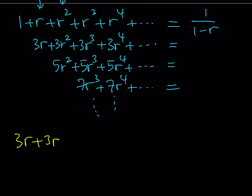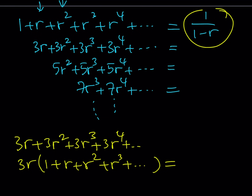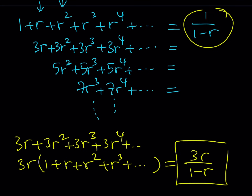Let me work them out so we can put it all together. Let's start with the second series. If you look at it carefully you'll notice I can pull out a 3r, and the rest is just 1 plus r plus r squared plus r cubed and so on. Since I already know this sum inside the parentheses equals 1 over 1 minus r, I can plug it in and get 3r over 1 minus r. So that's the sum of my second series.